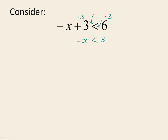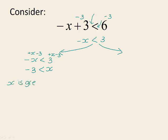At this point we need to be very careful because our x has got a negative coefficient. There are two different ways you might go about solving this. The first option is to keep the inequality sign exactly as it is and add x to both sides to get it positive. You then subtract 3 from both sides, giving you x is greater than negative 3.